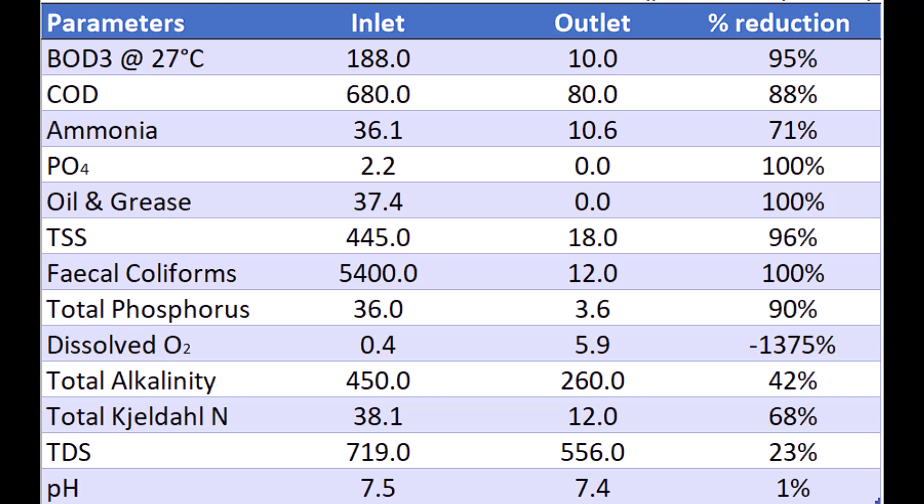The treatment can be facilitated not only at open water bodies but also at sewage treatment plants. The following are the water quality measurements from a 3 MLD STP in a city of India. Pollutants like phosphates, oil and grease, fecal coliforms have been completely eliminated, whereas the levels of BOD, COD, ammonia, total suspended solids and total phosphorus have been significantly reduced as well. The dissolved oxygen in the water has increased considerably and pH levels are also maintained.